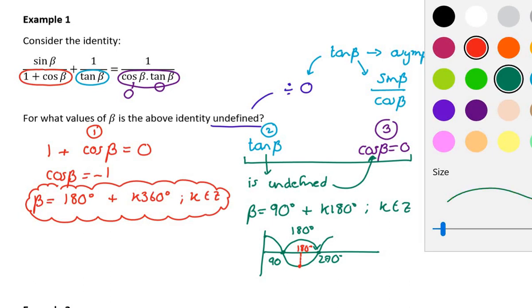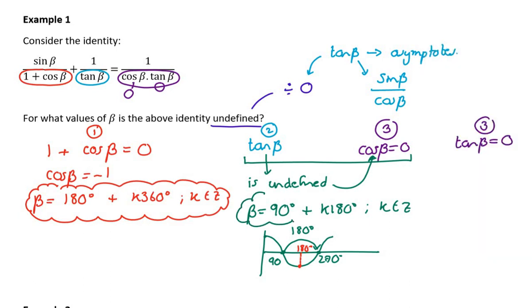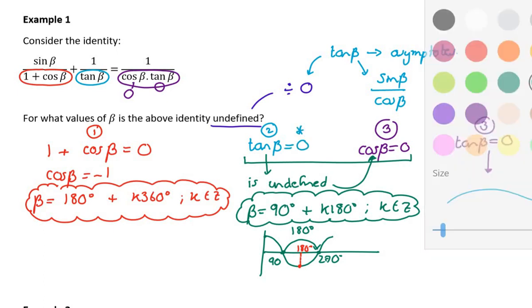Here's my second set of situations where this identity would be undefined. And the third one I need to do now is the fact that if tan beta was 0, so not only is tan beta undefined, which I've already discussed, in this case tan beta is in the denominator, which means tan beta can't be 0. In fact, tan beta is in the denominator twice, because it's here as well. So when is tan beta equal to 0?